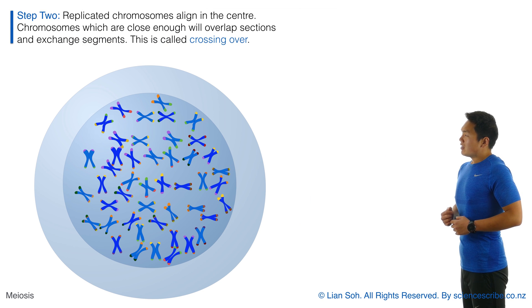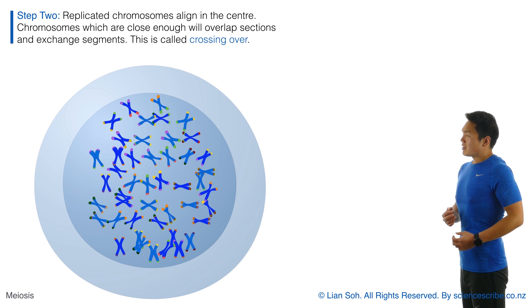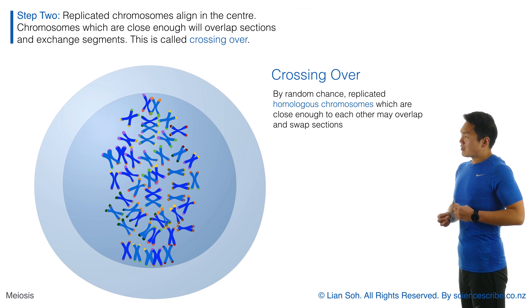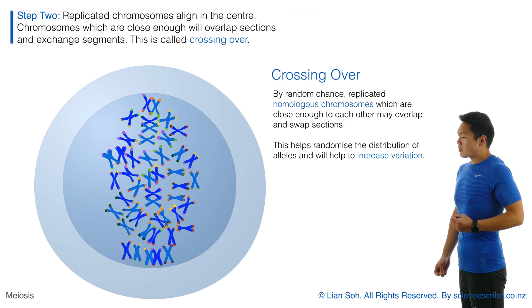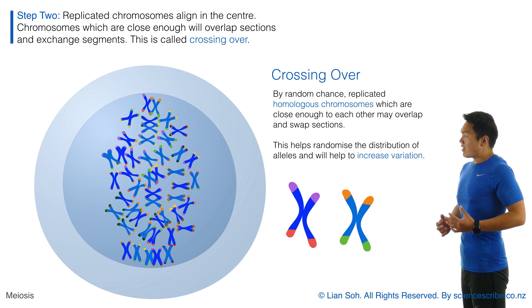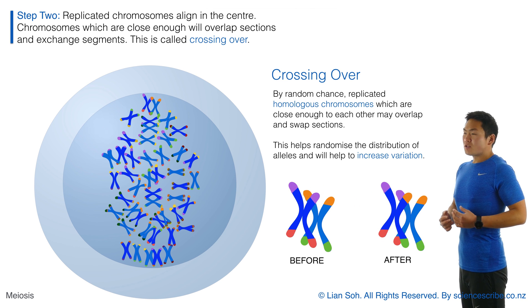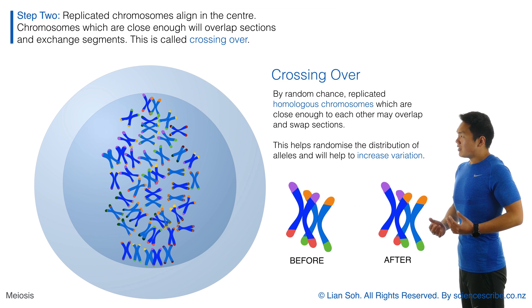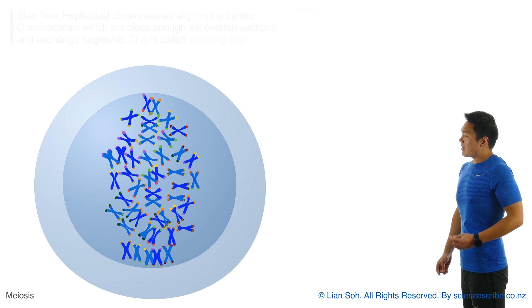Once that's done, the chromosomes align in the center, again exactly like mitosis. But the difference here is that the replicated chromosomes can actually overlap sections and begin to swap. This is random, and the whole idea is to jumble up and randomize where the alleles are going to end up, because this randomization helps with increasing variation — and that increase in variation does have some advantages.